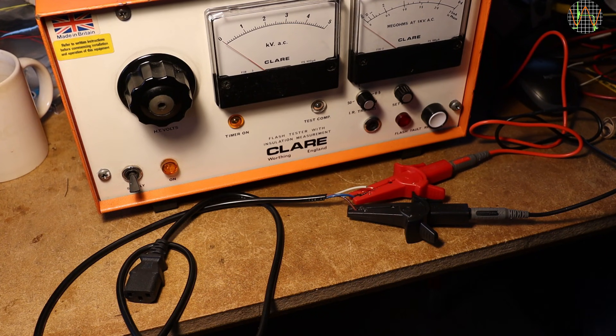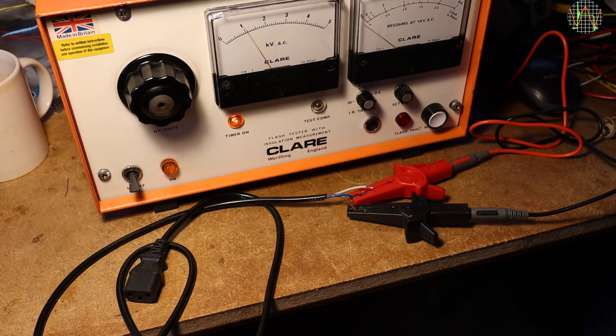Now that I have a flash tester, let's use it. The tester is set to 1000V which is applied for 10 seconds. If there is a flashover, an ear-splitting buzzer will sound. But nothing, which confirms the successful 1000V test I just did with the Extech.